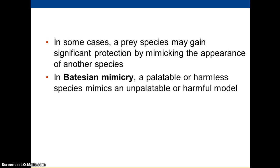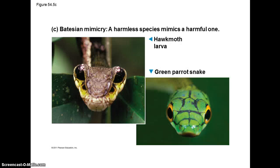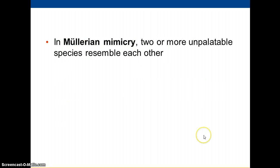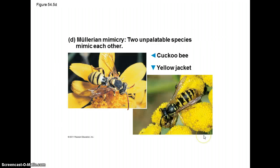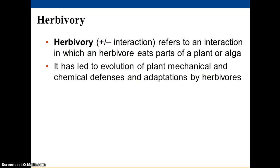To recap: Batesian mimicry is a harmless species mimicking a dangerous one. Müllerian mimicry is where two dangerous species mimic each other.